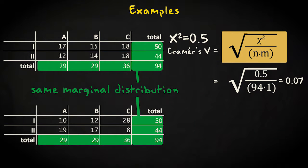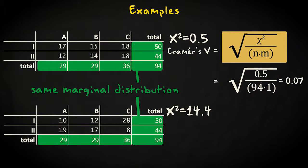And this is a 3 by 2 table with the same marginal distribution but a strong association. Now the chi-squared value is 14.4 and Cramer's V is 0.39.